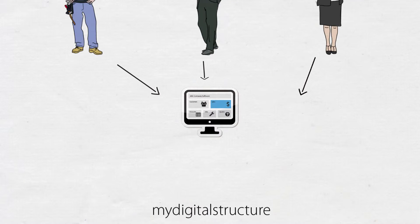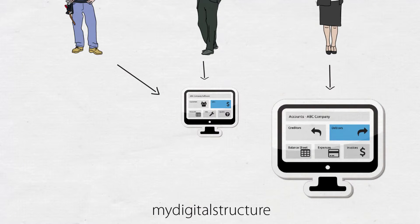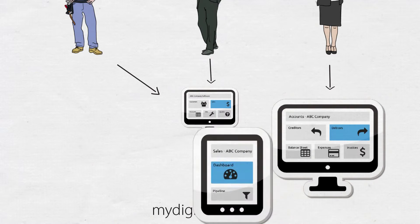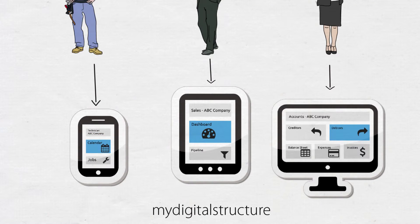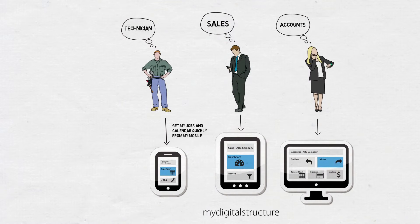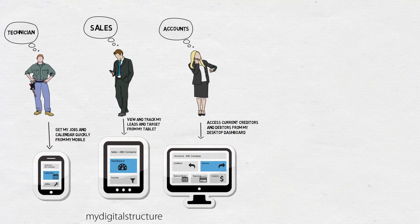Transitioning to the My Digital Structure platform will allow you to design and deploy multiple web applications designed specifically with a staff member's role in mind. This allows staff to have a tailored experience to quickly access information and functionality that is important in their role.